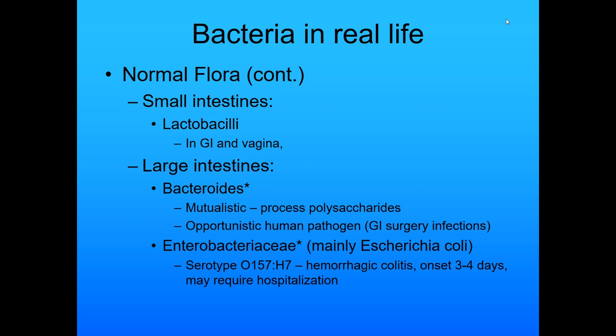Part of your normal flora: in the small intestine you have lactobacilli, which are in your gastrointestinal tract and in the vagina. In the large intestine, you have bacteroides. Most of them are mutualistic with us — they help us process polysaccharides like beans. This is why the more beans you eat, the better you get at digesting them, because you're literally growing the bacteria that help you digest them. But they're also opportunistic human pathogens that can make you sick if you have GI surgery infections.